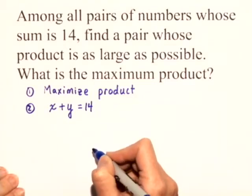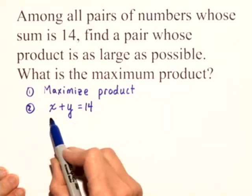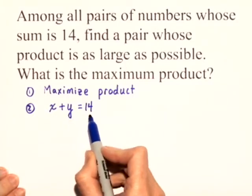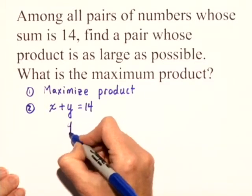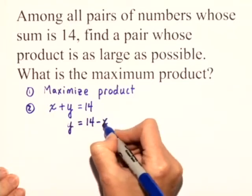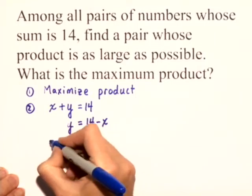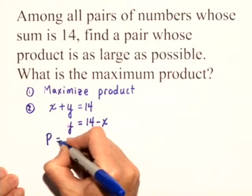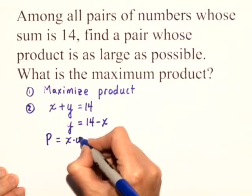But we also want the product to be maximized. So if x plus y is equal to 14, then we could say that y is equal to 14 minus x if we solve this equation for y. So therefore, we could say that our product, we'll use p for that, is going to be x times y.